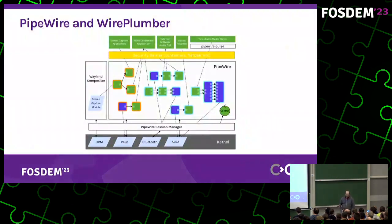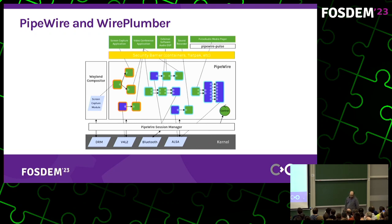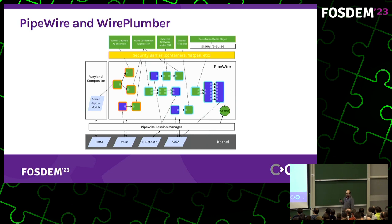PipeWire is a low-latency graph-based processing engine that attempts to handle audio and video streams. It is intended to replace both PulseAudio and JACK audio systems. WirePlumber is in charge of creating the audio and video nodes and the links between nodes.